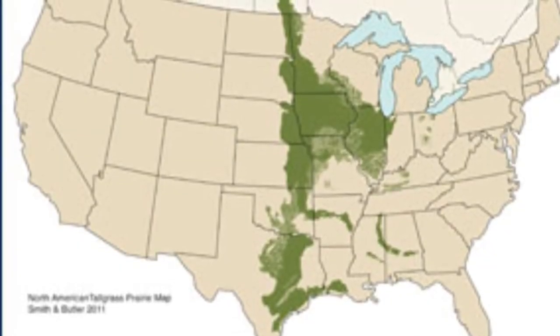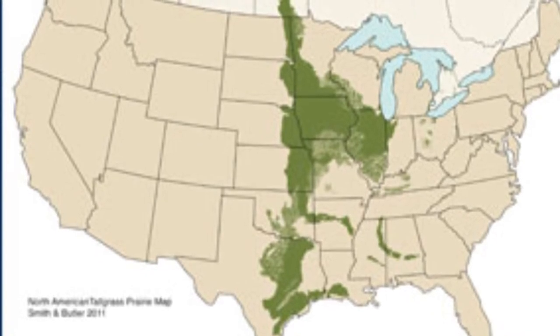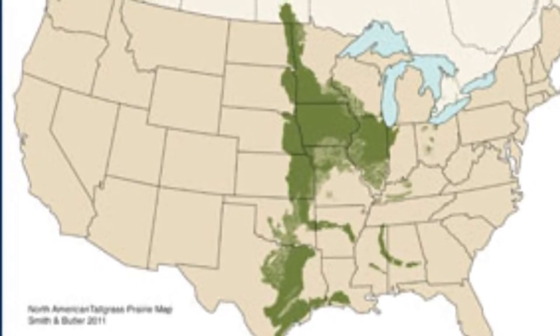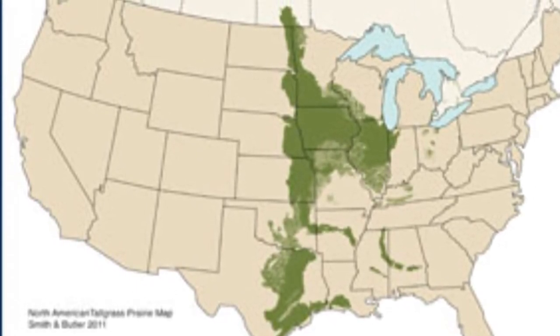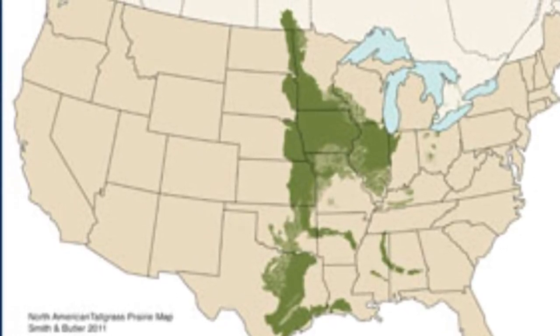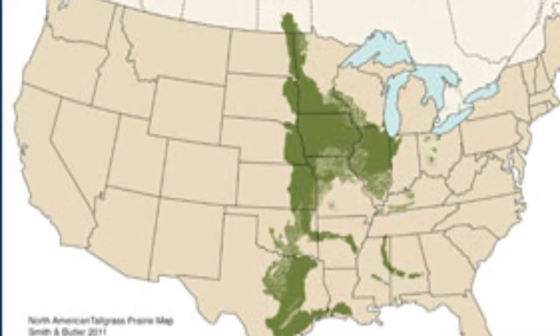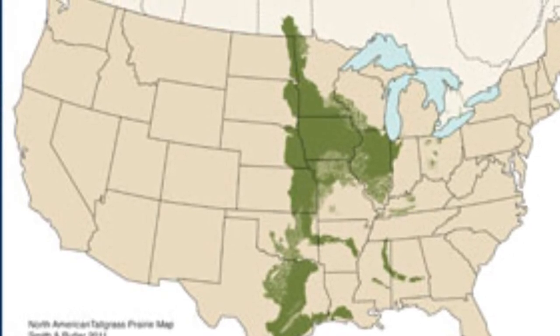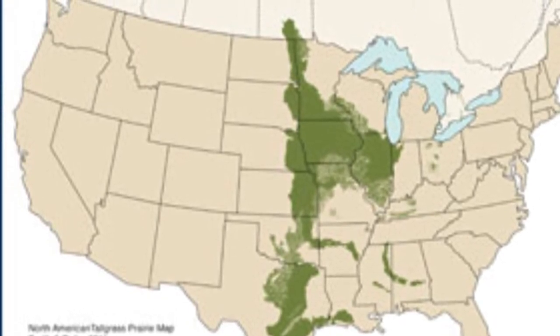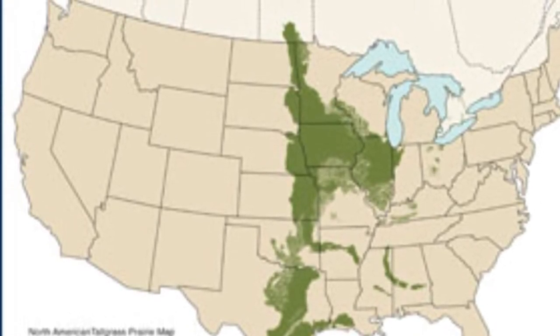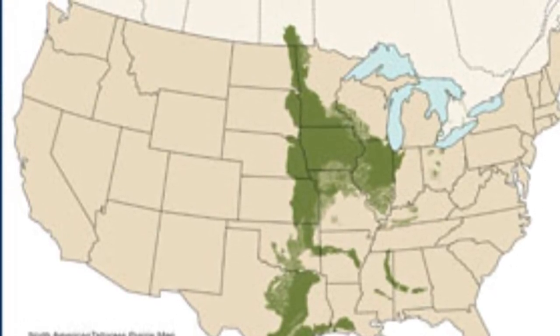This is a map of North America, and the green areas you see are grassland regions we call the Great Plains. The Great Plains is also where we grow our agriculture.